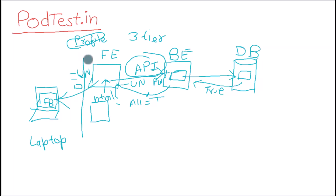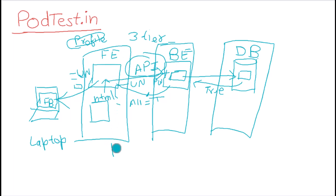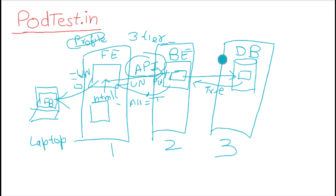So to summarize: the first layer is the frontend, the second component is the backend — that is the second part of the three-tier — and the third part is the database. This is the three-tier: one, two, and three. The first tier is the frontend which is the UI. The second is the backend where API calls and processing happen. The third is the database where data is stored.